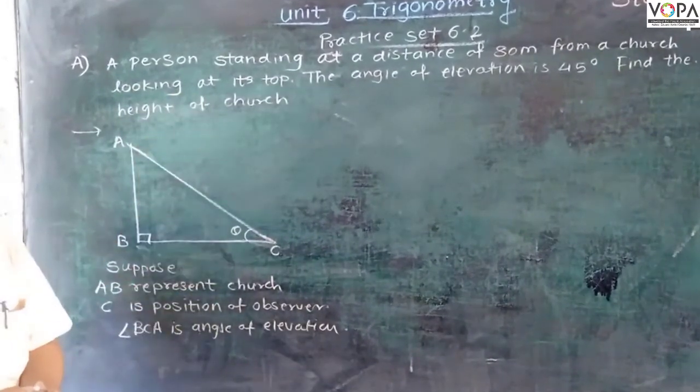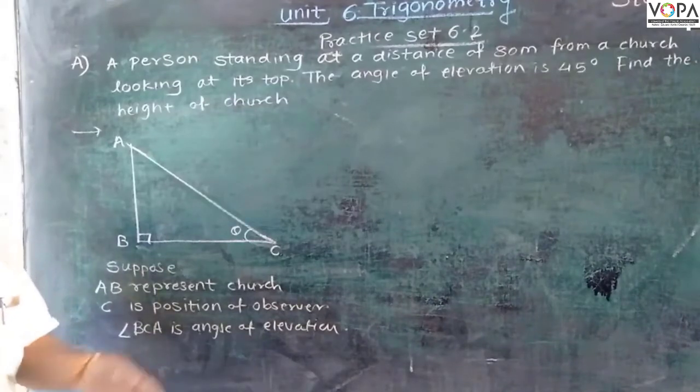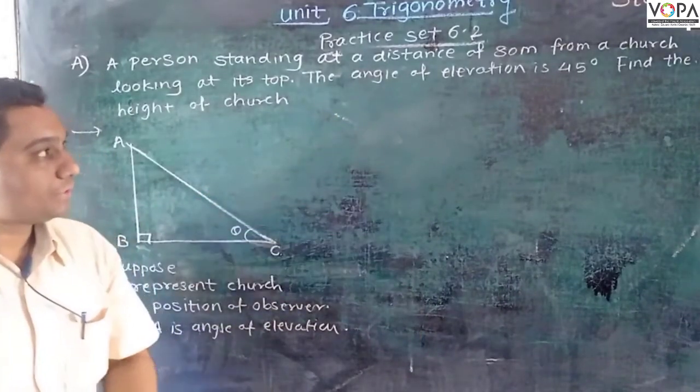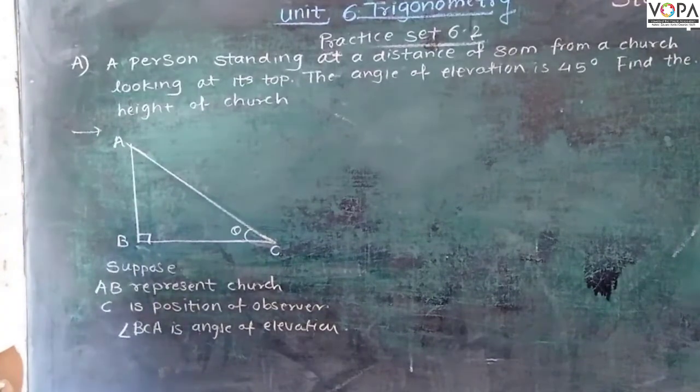A person is standing at a distance of 80 meters from a church, looking at its top. The angle of elevation is 45 degrees. Find the height of the church.